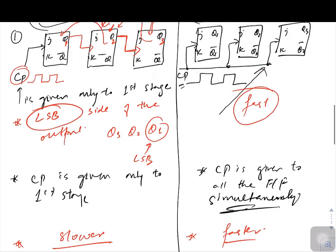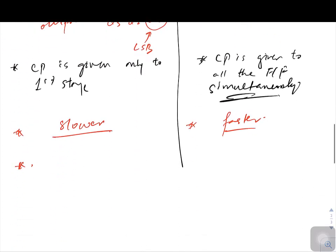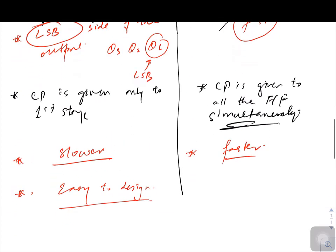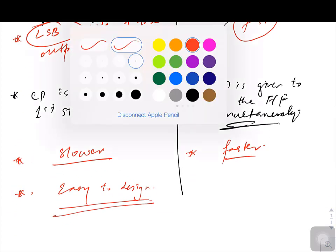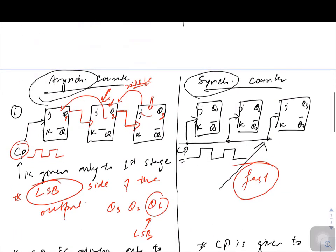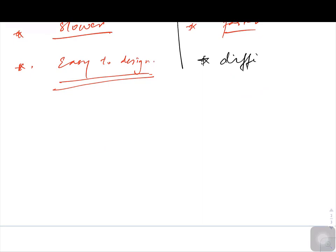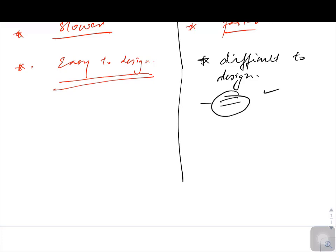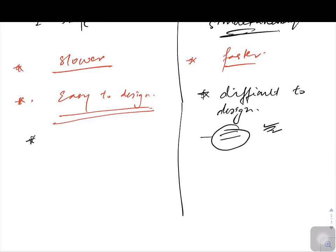One more point: asynchronous counters are easy to design, as we will see when we design them. Synchronous counters are difficult to design — and we will see in coming lectures why, because you need knowledge of state tables, excitation tables, and so on to get the circuit, whereas asynchronous counters are comparatively easier.